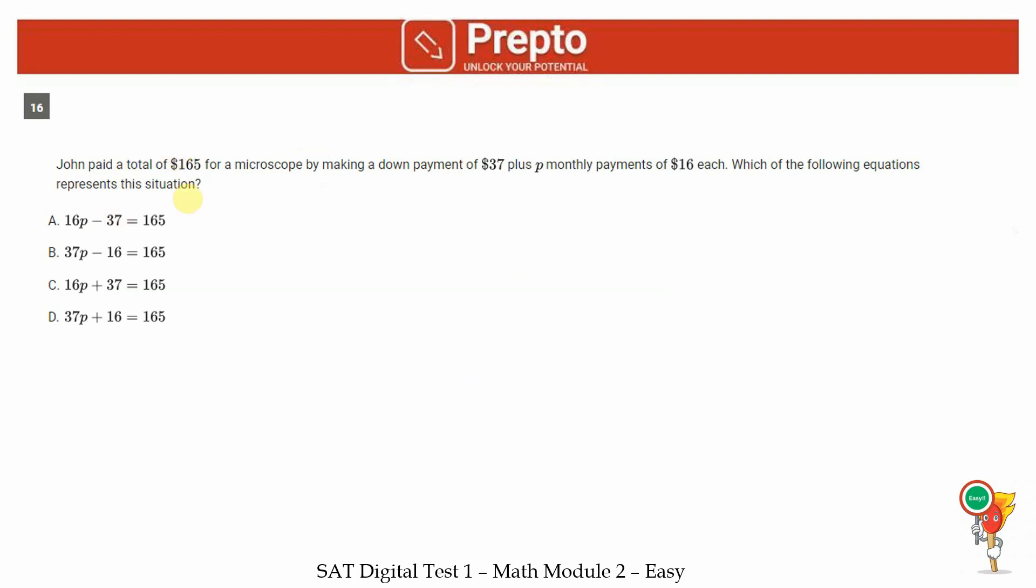16th question. John paid a total of 165 dollars by first making a down payment of 37 dollars and then monthly payments of 16 dollars for p months. Each month he is paying 16 dollars. So in p months he will pay 16p, and together this makes up the 165 that he has paid. If I compare this with all the options, we can clearly see that the answer is option C.